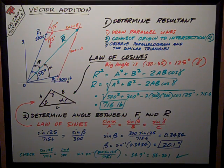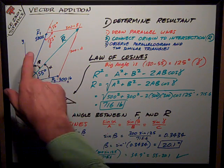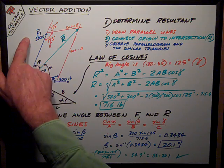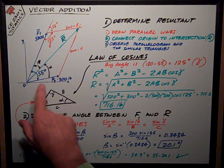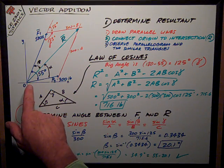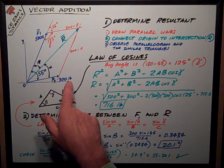We want to be able to add two vectors together and get the resultant. In this case, we've got vector F1, magnitude of 500 pounds, in this direction. Then at 55 degrees from it, we have vector F2, which is a magnitude of 300 pounds.